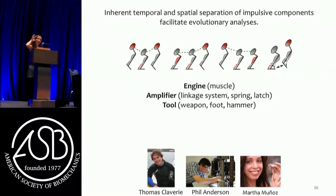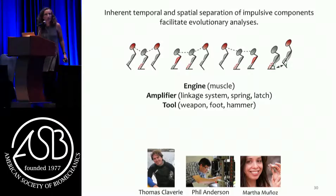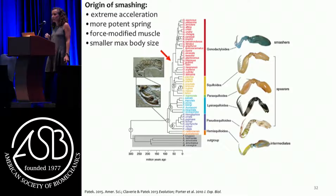In impulsive systems, we have that separation out of an engine like a muscle, an amplifier, a linkage system, and a tool like a weapon. Because they're spatially and temporally separated, we can start to ask what happens between these different structures and how that impacts evolutionary diversification. Mantis shrimp have a wonderful diversity of appendages - hammering shrimp, spearing shrimp, hatcheting shrimp. This phylogeny of mantis shrimp shows over 400 species. At the base of that arrow is where we see the evolutionary origin of smashing about 50 million years ago - smashers evolved from spearers.